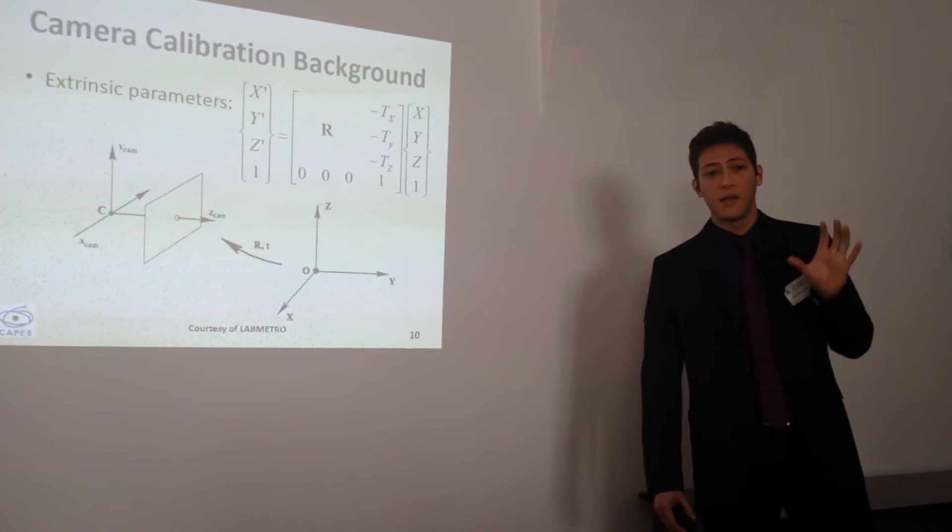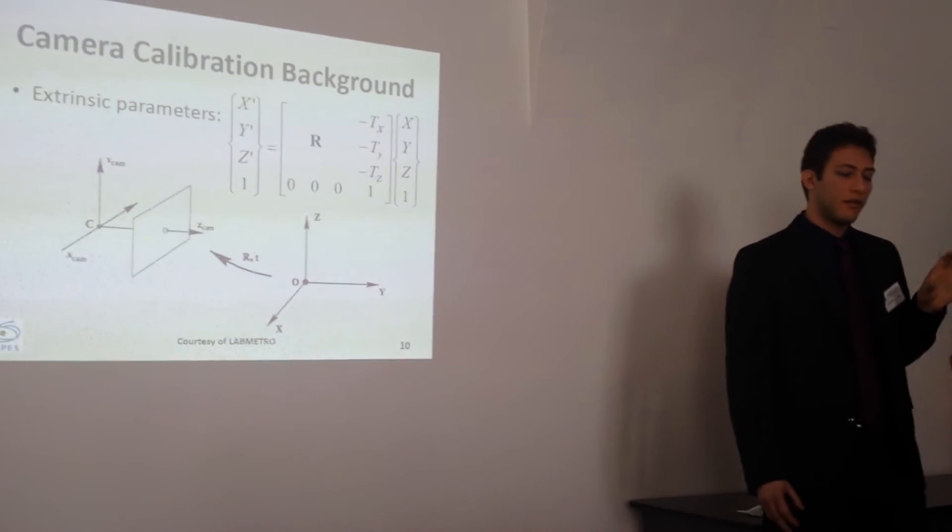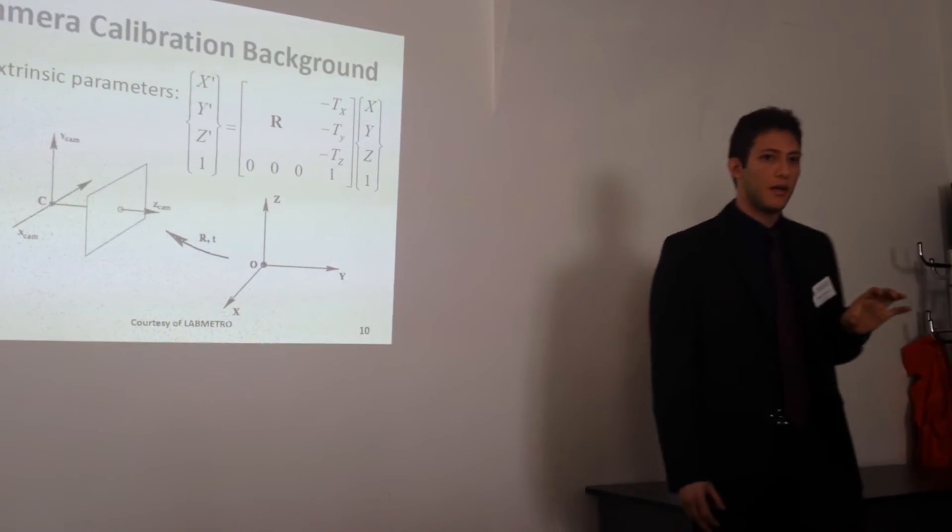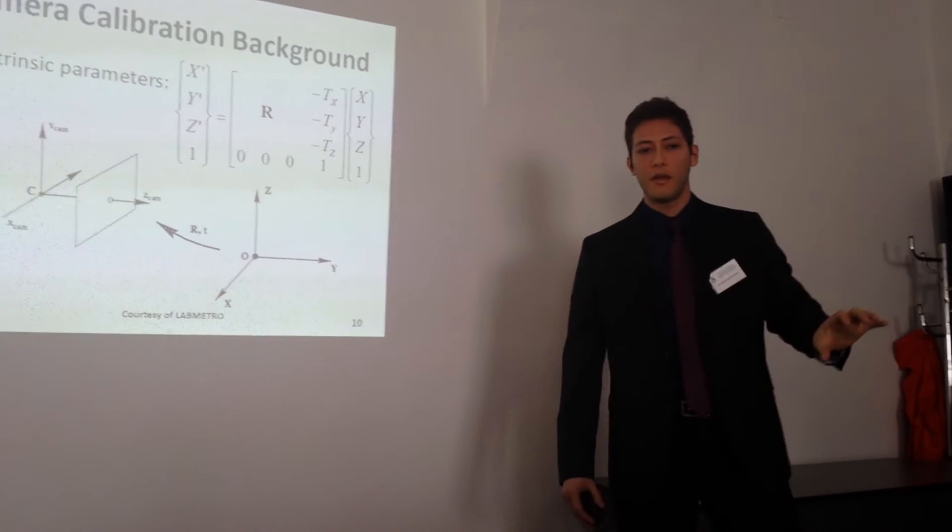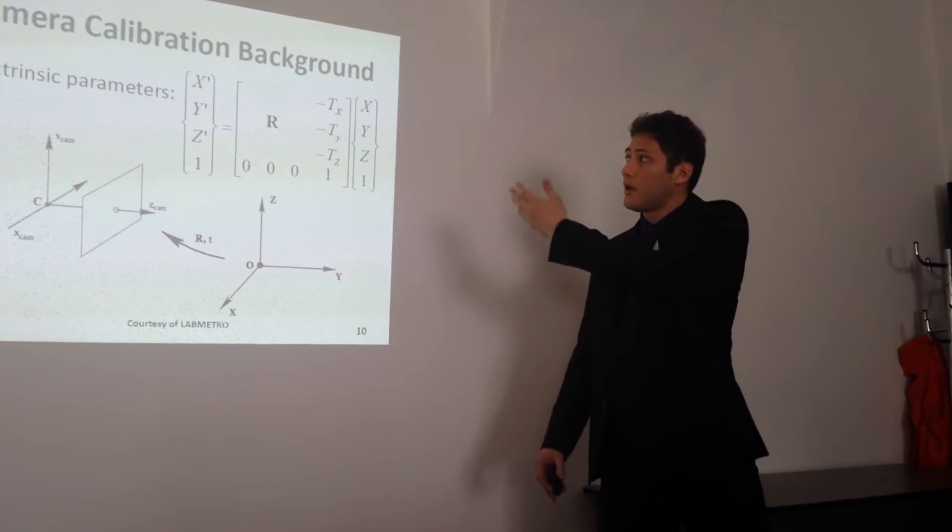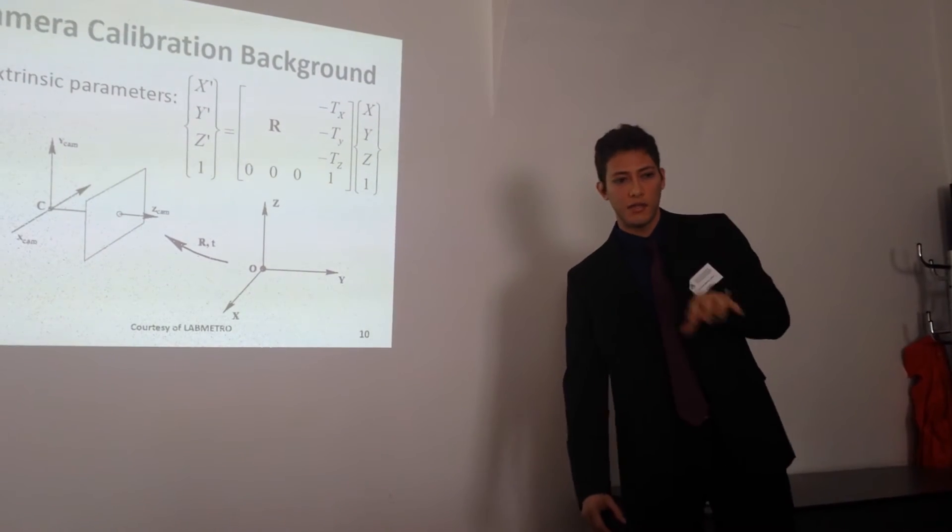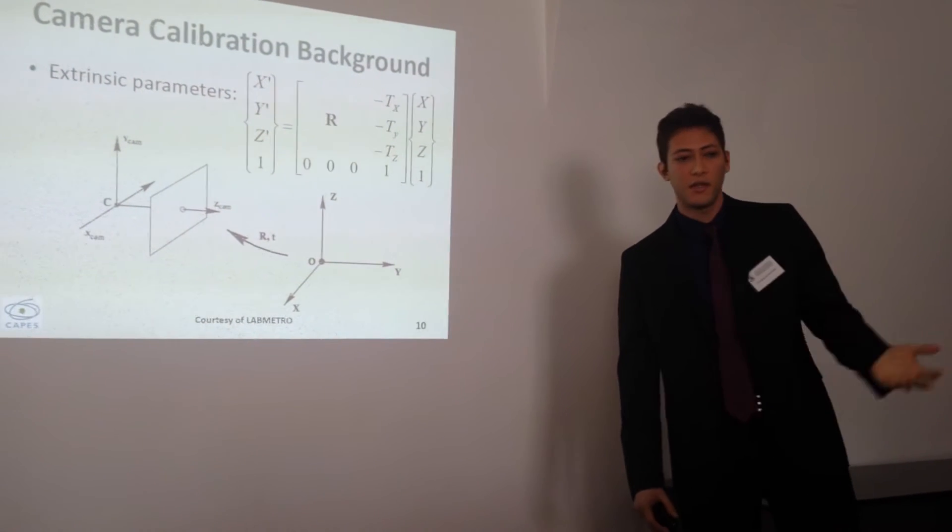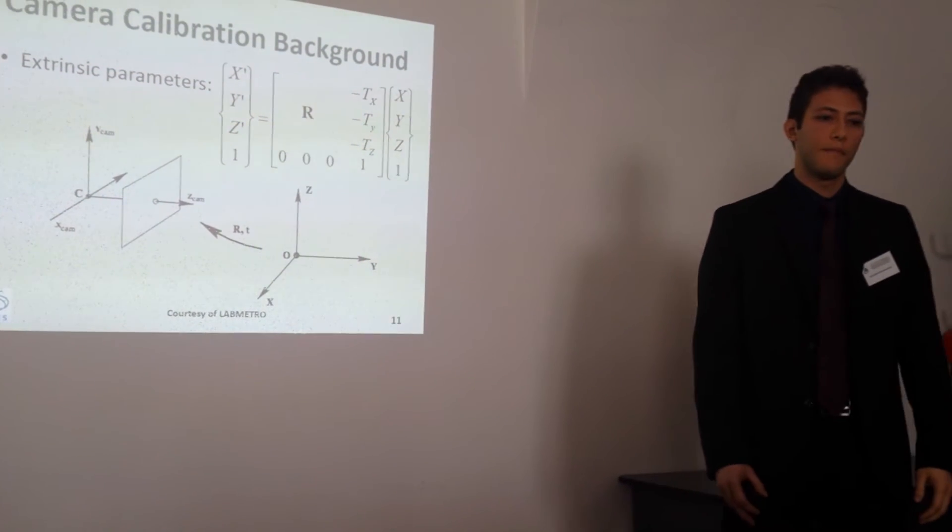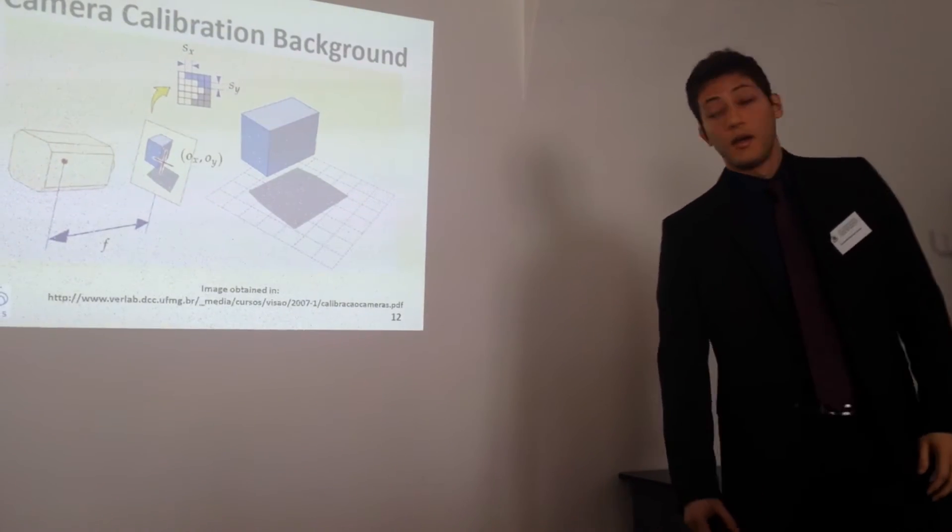The extrinsic parameters are basically the orientation of the camera in relation to the reference frame. This matrix has the rotations and the translations in relation to the base frame.